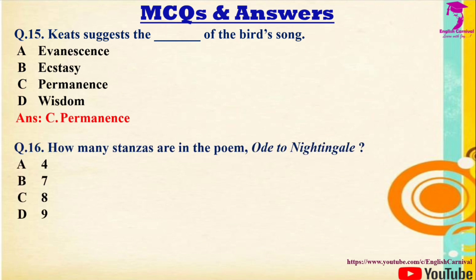Question 16: How many stanzas are there in the poem Ode to a Nightingale? Options: A) 4, B) 7, C) 8, D) 9. The correct answer is C — there are eight stanzas.